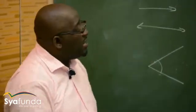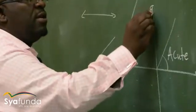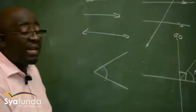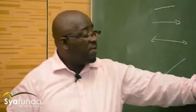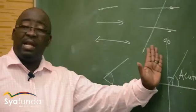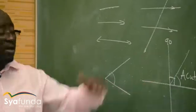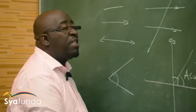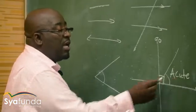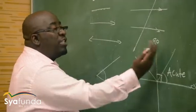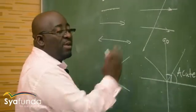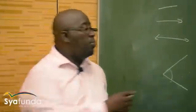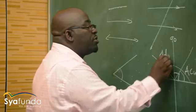After the acute angle, the second type is the right angle, which is exactly 90 degrees — also called perpendicular. After the right angle, moving into angles above 90 degrees but less than 180 degrees, those are called obtuse angles. An obtuse angle is greater than 90 degrees but less than 180 degrees.